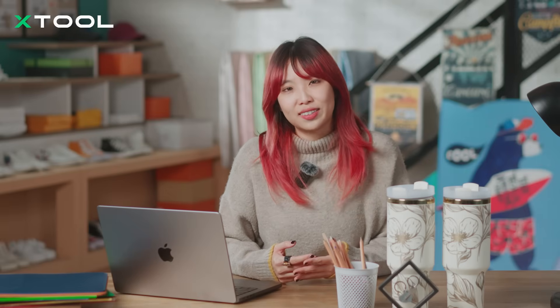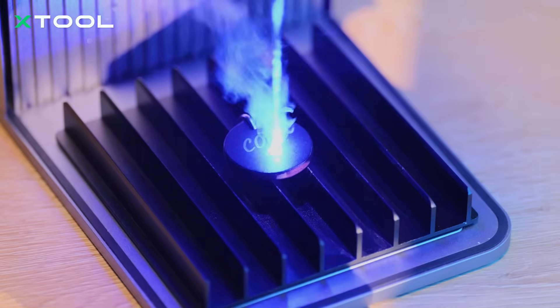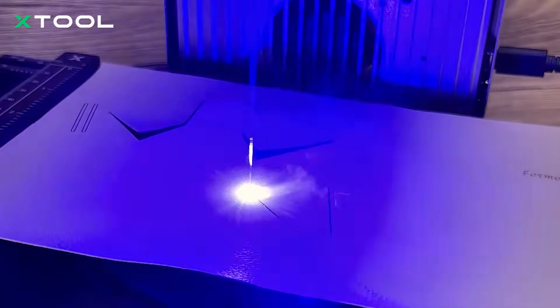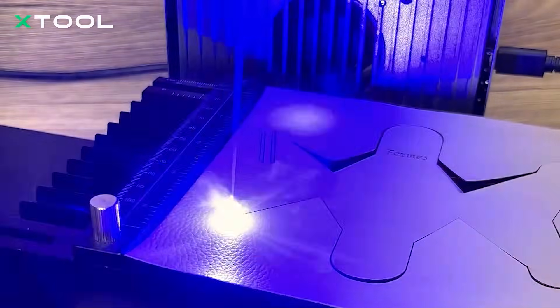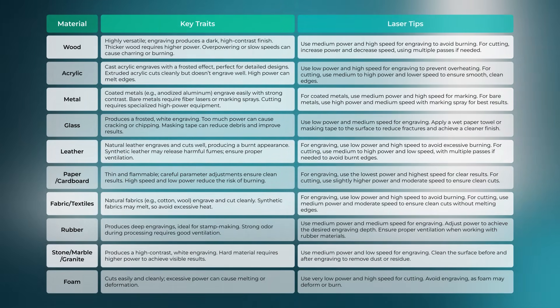Leather is a flexible organic material that can burn or discolor under high laser power. For engraving, lower power prevents burning and keeps details sharp, while cutting requires controlled power to avoid charred edges. Of course, there are many different types of materials you can work with, so we have created a table for you — feel free to take a screenshot of it for future needs.